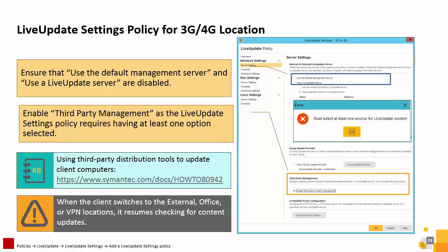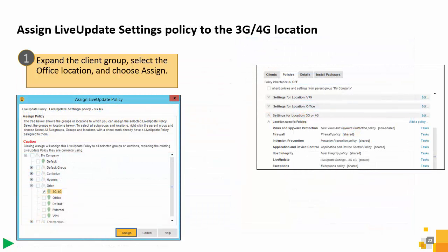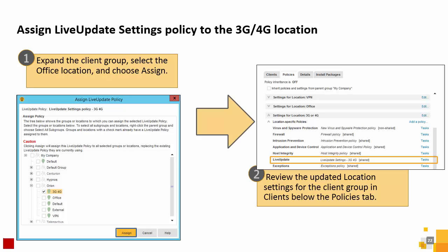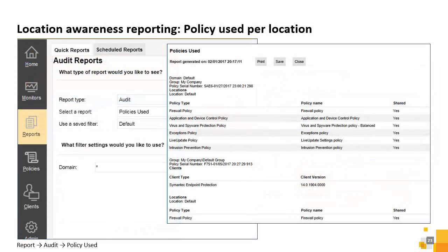The new policy is ready to be assigned to the 3G/4G location. After the policy is assigned, you can review the updated location settings for the client group in the clients below the Policies tab. After configuring the new locations, you can run a Policy Used report to sort policies by location.